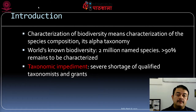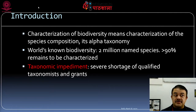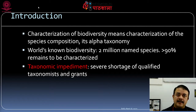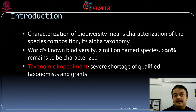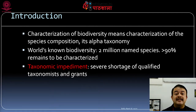Taxonomic impediment is a term meaning there is a severe shortage of qualified taxonomists and grants. Taxonomy is considered an old discipline and is not really in favor these days. People think molecular biology, genomics, transcriptomics, and other trendy fields are much better, and that taxonomy is not very interesting — that is a common misconception. Because of this, funds are limited and qualified taxonomists are very few. A qualified taxonomist can identify species just by looking at morphology — they have a trained eye.